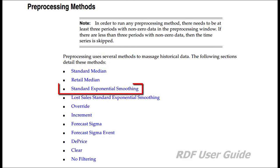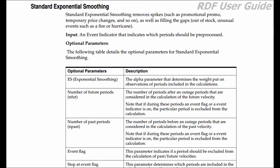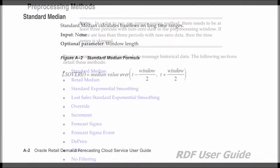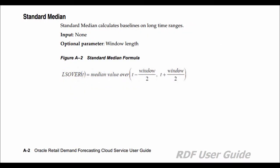Another commonly used method is standard exponential smoothing. The two main uses include the removal of spikes such as water sales before a big storm. In addition, an item can be heavily promoted one year, and you want to remove all the promotional lifts for that item to get a better representation of baseline demand for that year. Finally, the standard median can process a choppy line into a smooth line for customers who prefer their forecasts to have a smoother look.